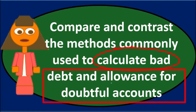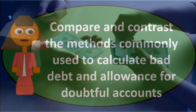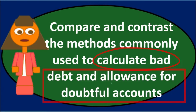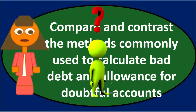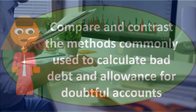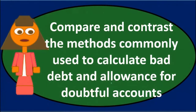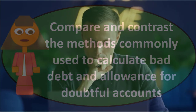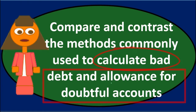The older a receivable is, the more likely it is that we will not collect on it. If we have been trying to collect for 90 days without success, collection becomes increasingly unlikely. We estimate how much of the receivables we think are uncollectible and then set the allowance for doubtful accounts to match that estimate, based on timing rather than identifying specific customers.